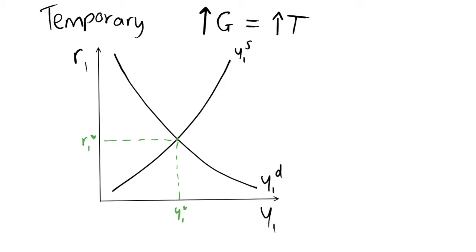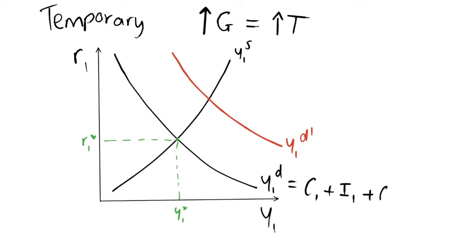Our initial effect of the increase in government spending, as before, is to shift our aggregate demand curve out to the right — aggregate demand equals C + I + G, so increasing government spending shifts it by the change in G. However, again we do have to increase taxation. And so this is going to decrease our aggregate demand in a similar way to what we saw in the permanent increase. However, this is different, and it may not be completely obvious why.